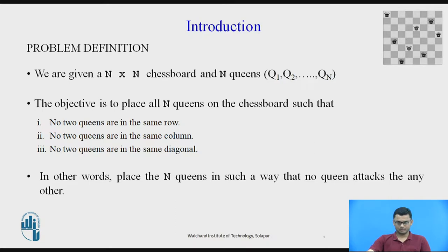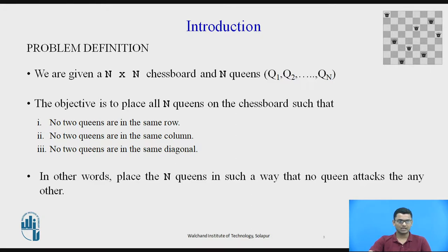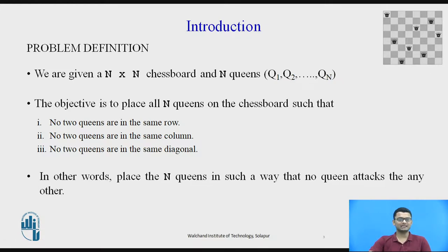So what exactly is the problem? We are given an N×N chessboard and N queens. If it is an 8×8 chessboard as we usually use, we will be given 8 queens. If it is a 4×4 chessboard, we will be given 4 queens, and so on. The objective is to place the N queens on the chessboard such that no two queens are in the same row, no two queens are in the same column, and no two queens are in the same diagonal.